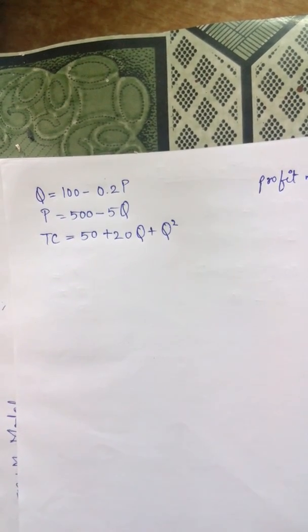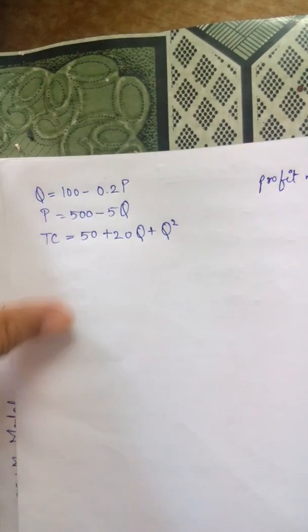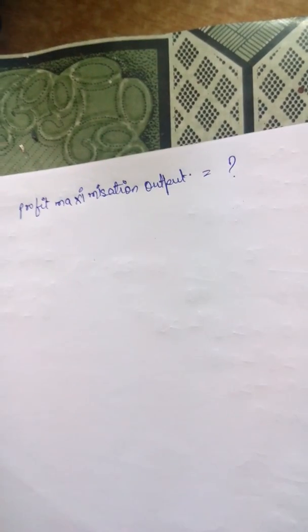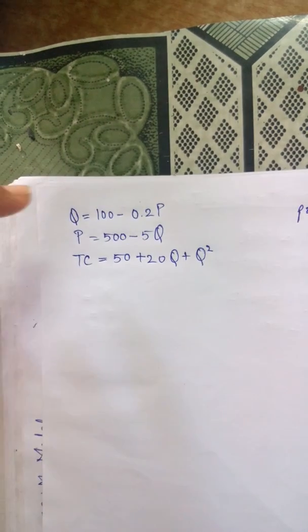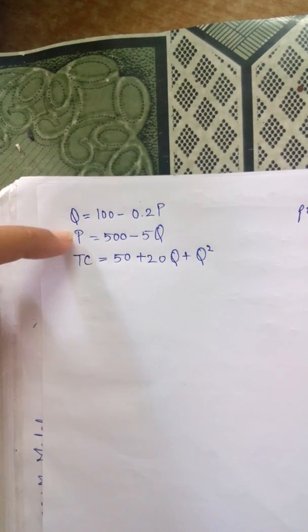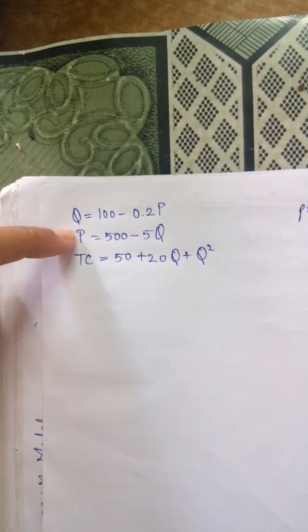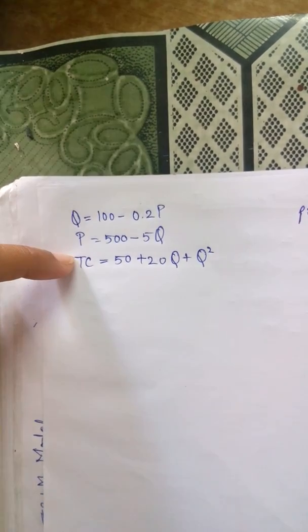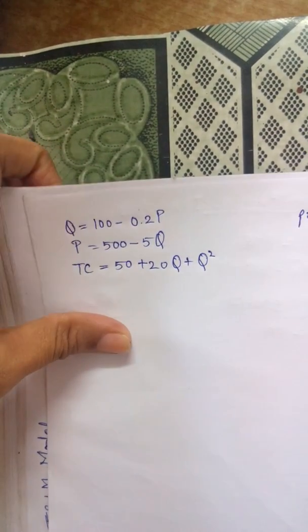Hello friends, today we are going to learn how to find the profit maximization output when the demand function is given. Price is equal to 500 minus 5Q, and the total cost function is also given.